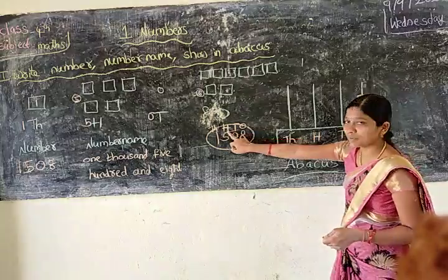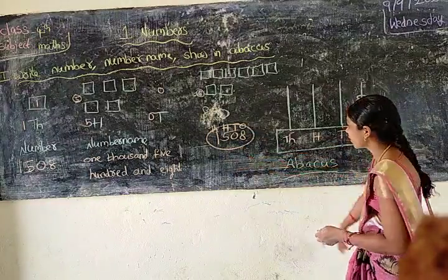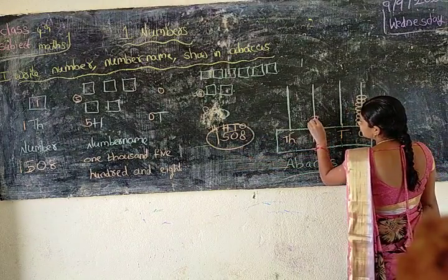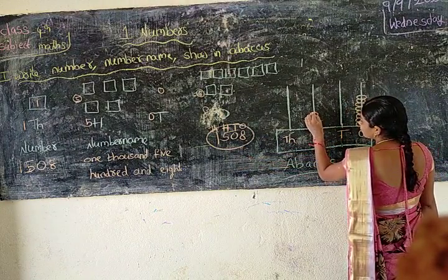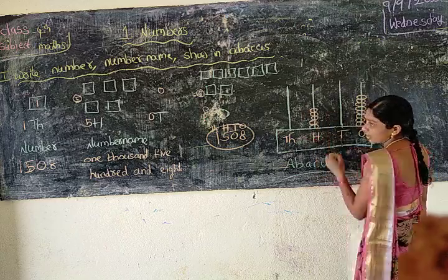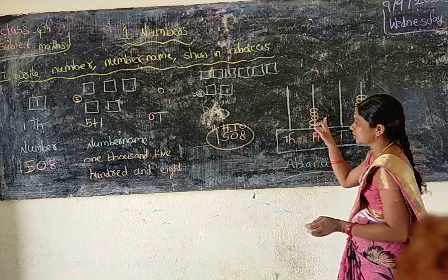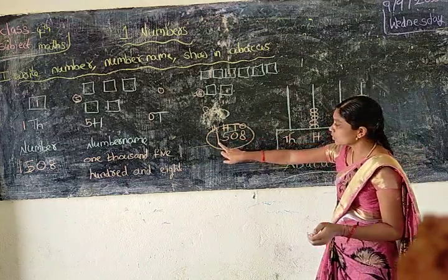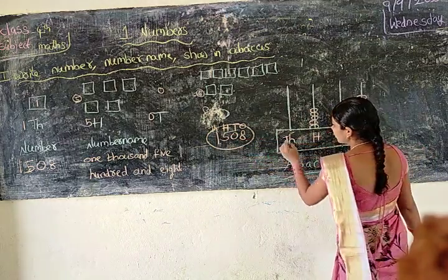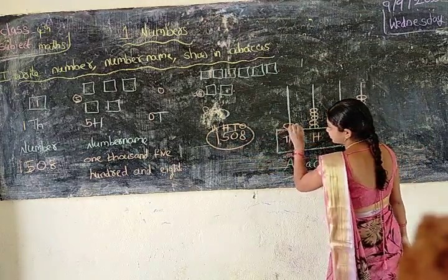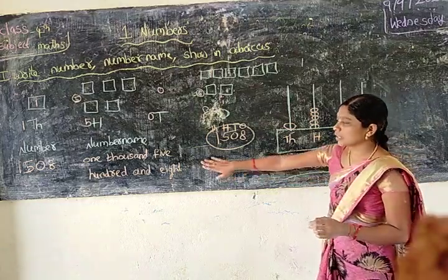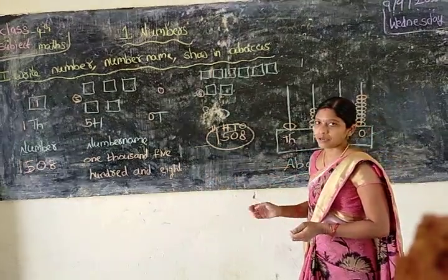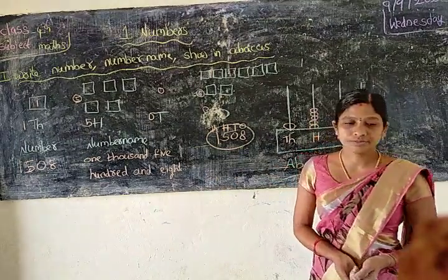Next, hundreds place — we have five, so five beads: one, two, three, four, five. And in the thousands place, we have one, so one bead. This is the number, number name, and abacus representation.